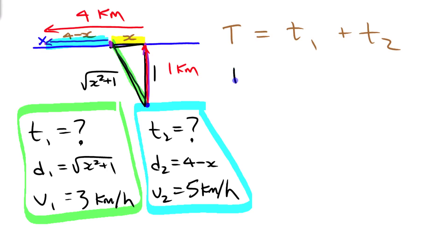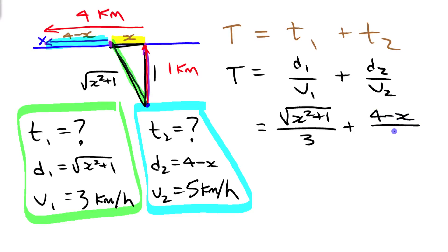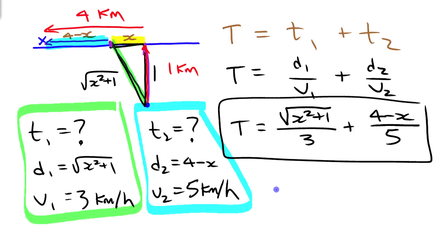Total time equals distance one over speed one plus distance two over speed two, since time equals distance divided by speed. Substituting in my expressions: T(x) = √(x² + 1)/3 + (4 − x)/5. That's the time function I'm going to minimize — time as a function of x, where x is the distance down the shore where I land the boat.